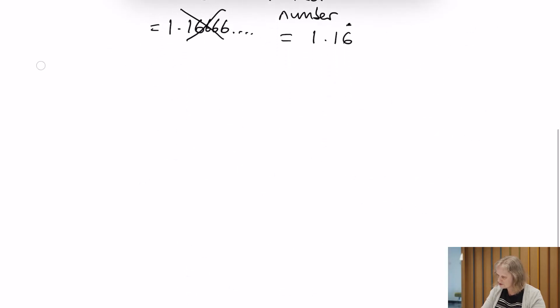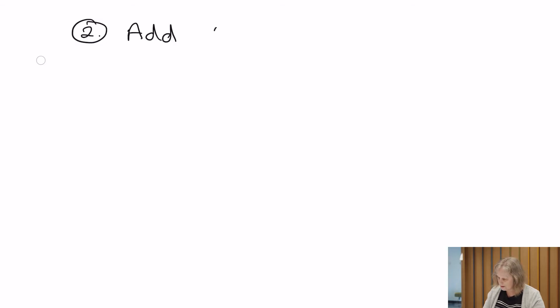For question 2, we're going to introduce the element of mixed numbers. We're going to add together these two fractions, which are both mixed numbers: five and three quarters, plus three and a half.